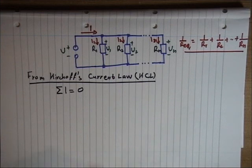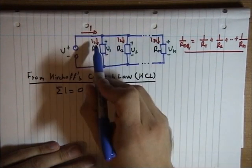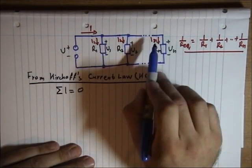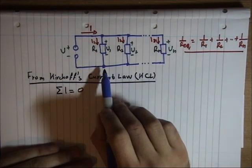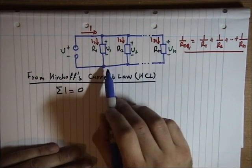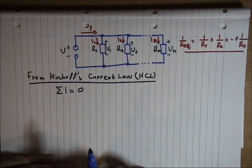In this case, everything up here is one node because it's a series of wires without any other elements inside. This is another node which is another series of wires.